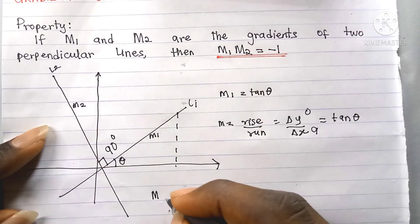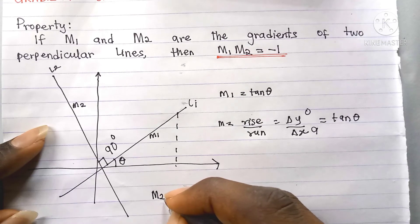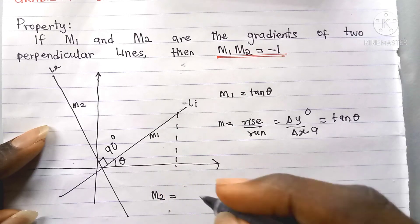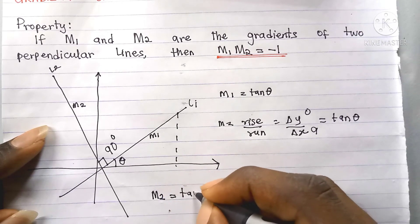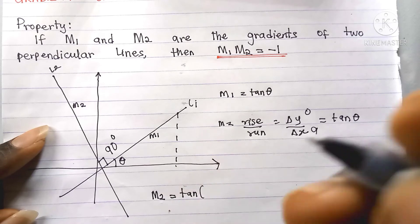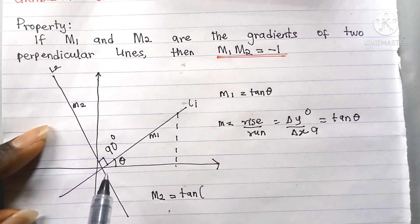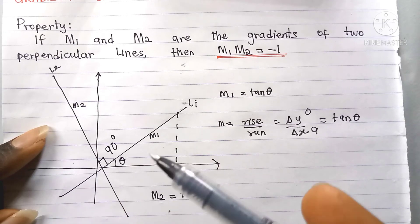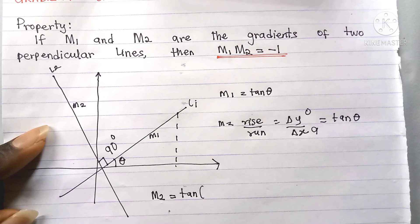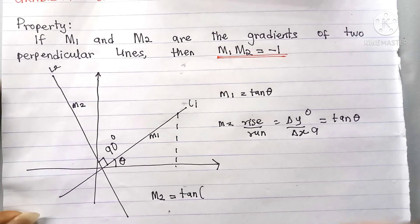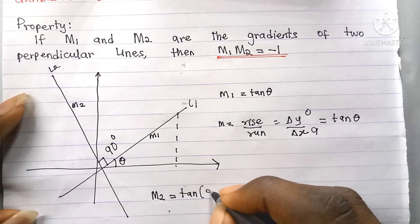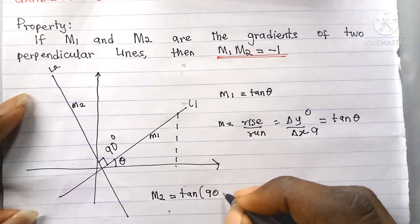Now, what does m2 equal? Since l2 makes an angle of 90 plus theta with the positive x-axis, m2 is equal to the tangent of 90 plus theta.